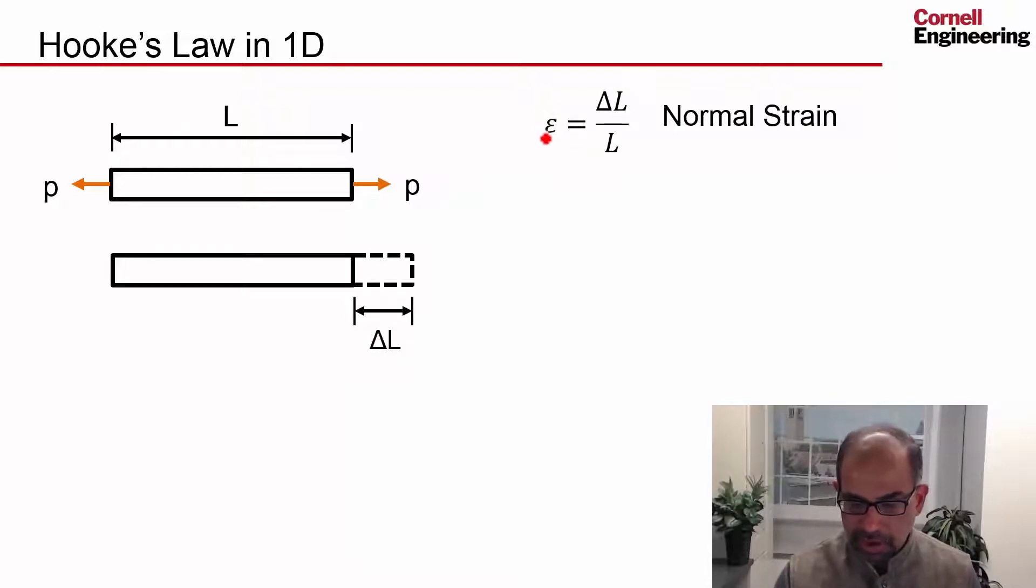The strain, epsilon, is defined as the change in length divided by the original length, so it's a relative change in length, a relative change in dimension, so it's delta L over L. You would call this a normal strain because the extension is normal to these planes.